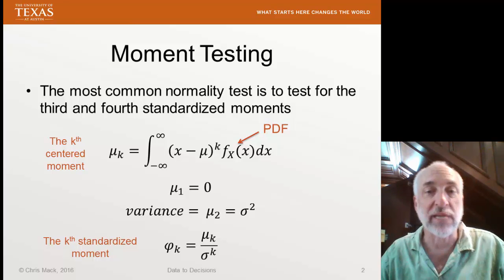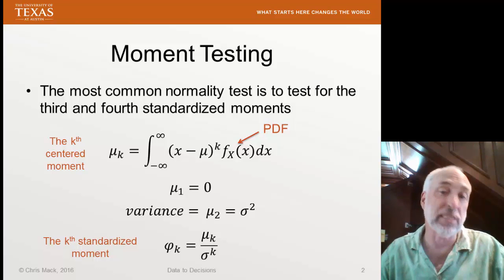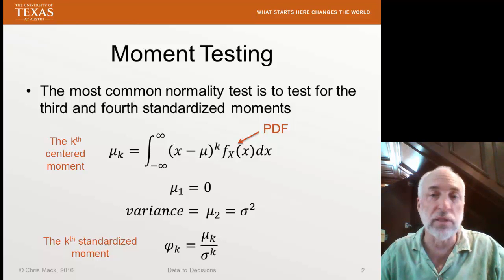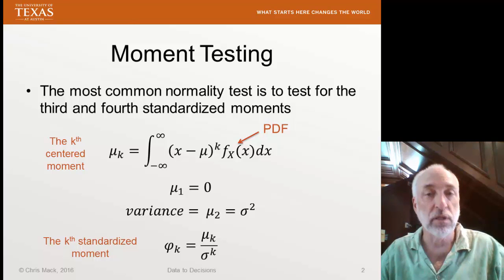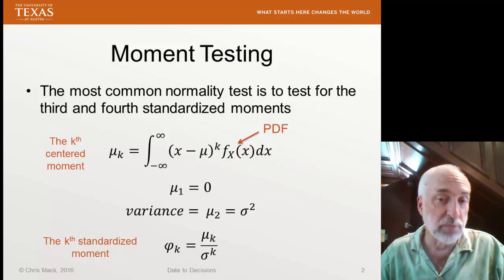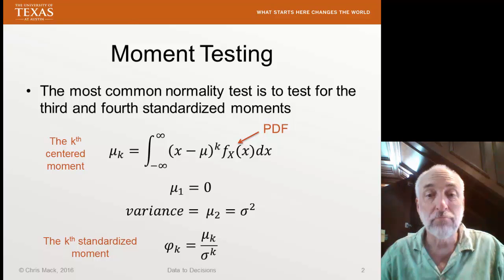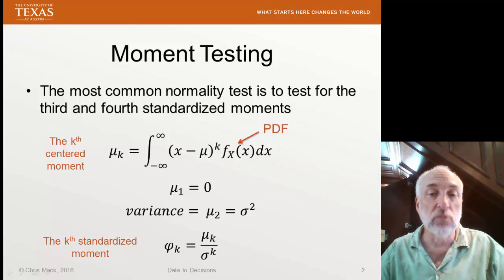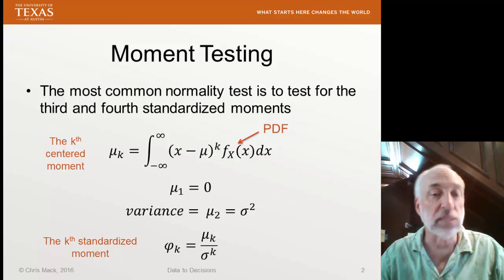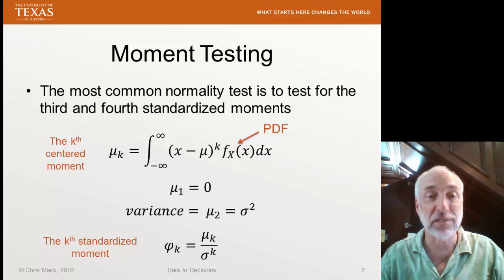All the other moments — the second moment, the third moment, etc. — may not be 0. In fact, the second centered moment is what we call the variance. Mu_2 is nothing more than sigma squared, the variance of this distribution. We often standardize our moments by dividing mu_k by the standard deviation to the kth power. This normalizes it based on the spread so that it's easier to compare distributions. It will be these kth standardized centered moments that we're going to be interested in.